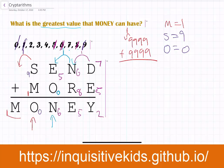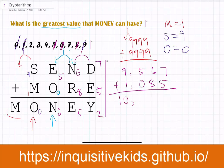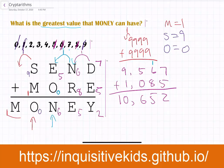Let's check to see if this makes sense. SEND is 9,567 and MORE is 1,085. Added together, they equal 10,652. Checking: 7 plus 5 equals 12, carry a 1. That gives 15, carry a 1. Yes, this all checks out — and this is actually the greatest value that MONEY can have.